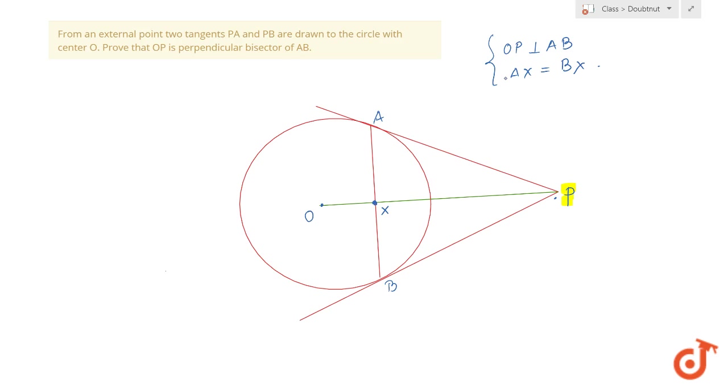To get to this, first I will join OA, which is a radius, and join OB, which is also a radius. What I'm gonna do now is I'm gonna get rid of AB. I'll bring it back again.